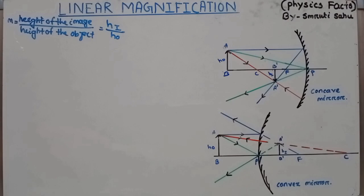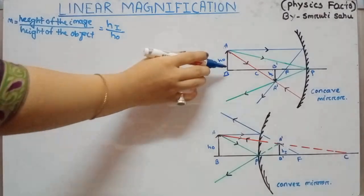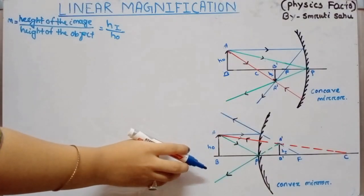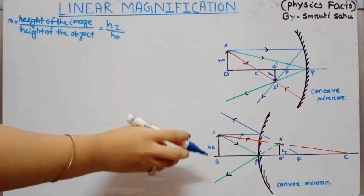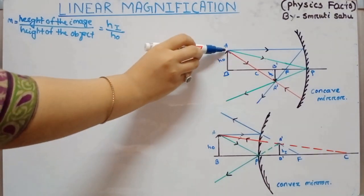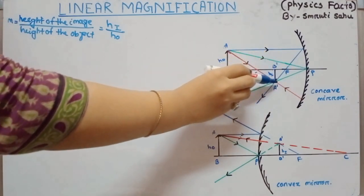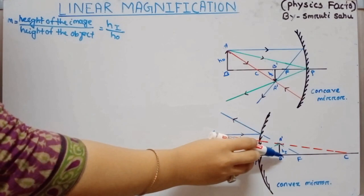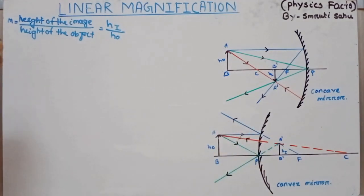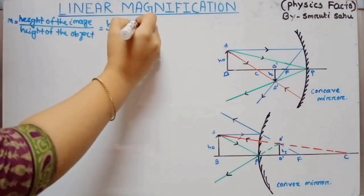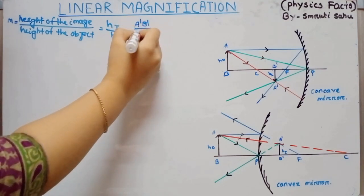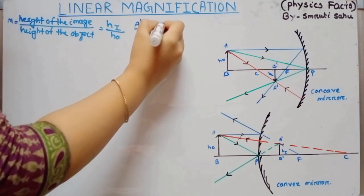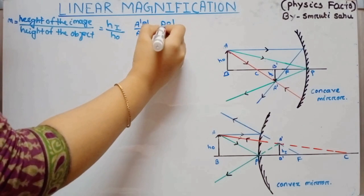In case of concave mirror and also in case of convex mirror, we get two similar triangles: one is ABP and another one is A'B'P. When we consider these two triangles as equivalent to each other, A'B' by AB is equal to PB' by PB.